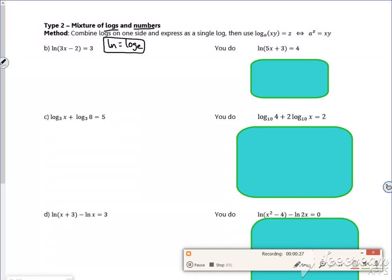So this would be ln is log to base e. So to remove ln, it's e. So if I take e of both sides, I'm not sure how much e we've done. It would be e to the ln of 3x minus 2, which cancels itself out because you have 3x minus 2.